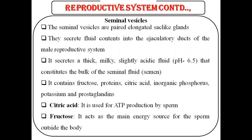The semen also contains fructose, which acts as the main energy source for the sperm outside the body. To summarize: seminal vesicles are sac-like glands that secrete a thick, milky, slightly acidic fluid called semen, containing fructose, protein, citric acid, inorganic phosphorus, potassium, and prostaglandin. Citric acid is used for ATP production by sperm, and fructose is the main energy source for sperm outside the body.